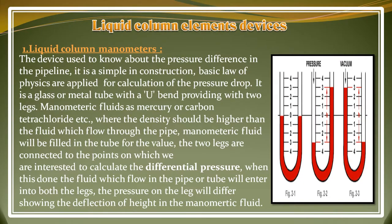The liquid column manometer is a device used to measure pressure difference in a pipeline. It is simple in construction and basic laws of physics are applied for calculation of the pressure drop. It is a glass or metal tube with a U-bend providing two legs. Manometric fluids such as mercury or carbon tetrachloride are used, where the density should be higher than the fluid flowing through the pipe.